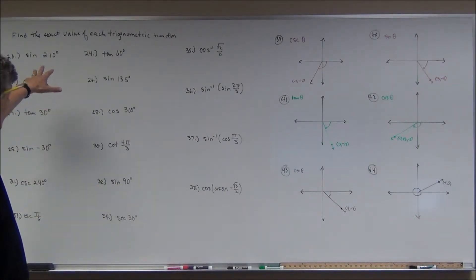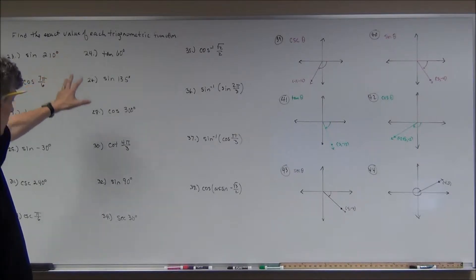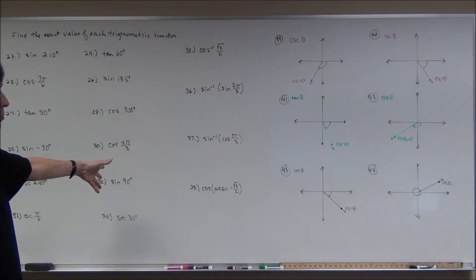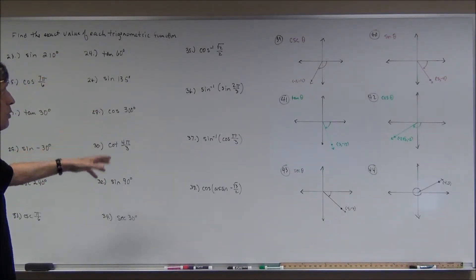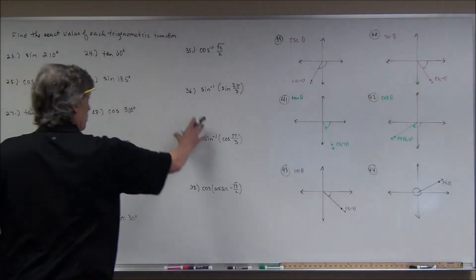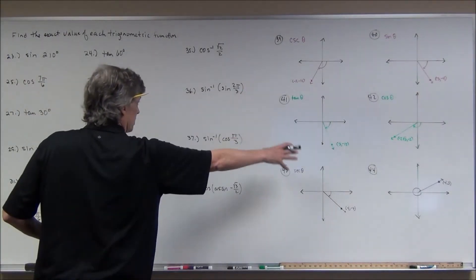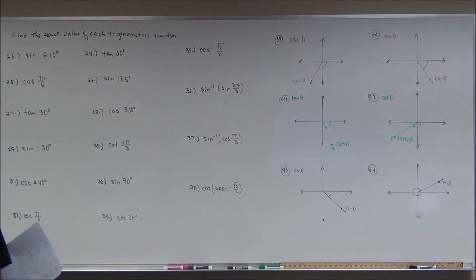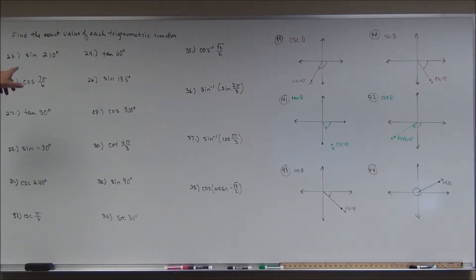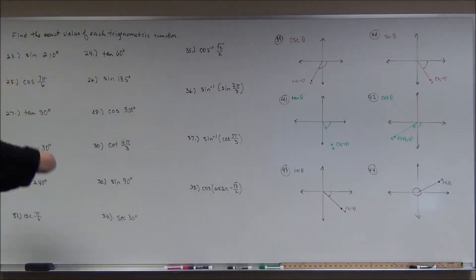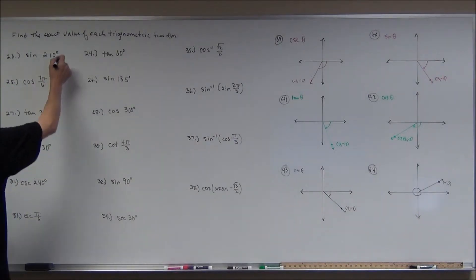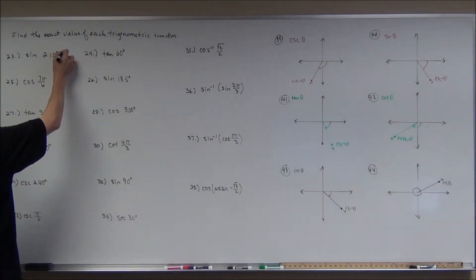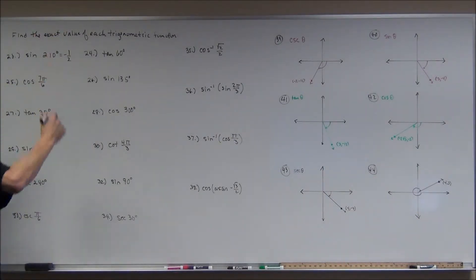These are not tough problems if you know your unit circle. The sine of 210 degrees — in the third quadrant, sine is negative. This is negative one half. How easy was that?